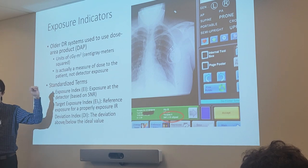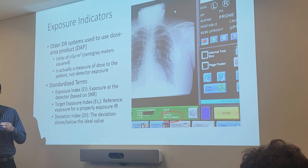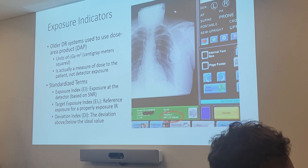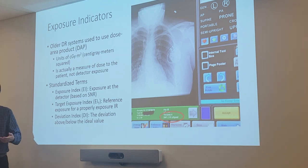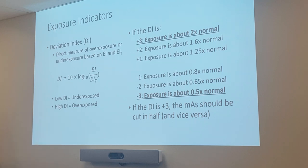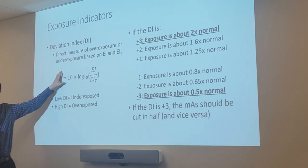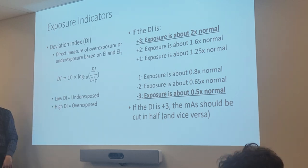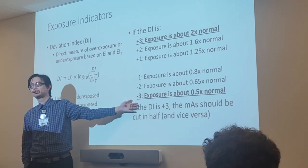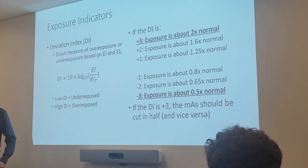Some machines instead of EI give you a deviation index (DI). You may have seen this at clinic, where they have a light that turns green or yellow depending on how far off you are — plus one, plus two, or plus three. That is deviation: how far you are from where you want to be. You don't need to memorize the DI equation, just the bolded key parts. This is logarithmic.